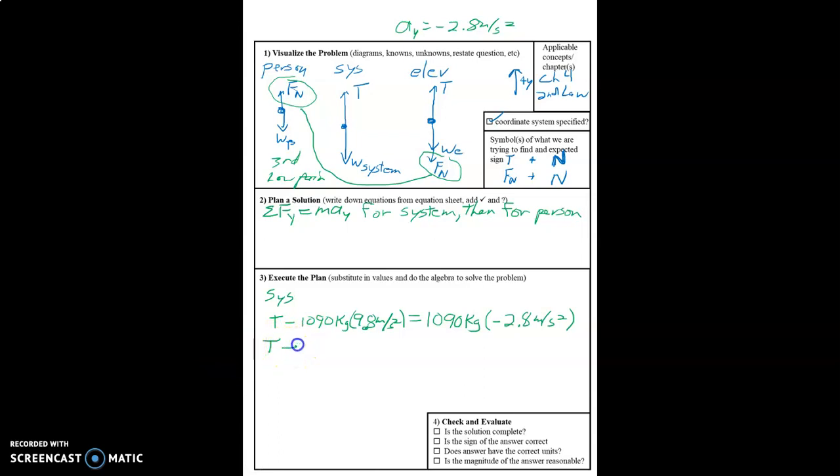So T minus, and we're going to punch this in on the calculator. You can try it along with me. And get 10,682 newtons.